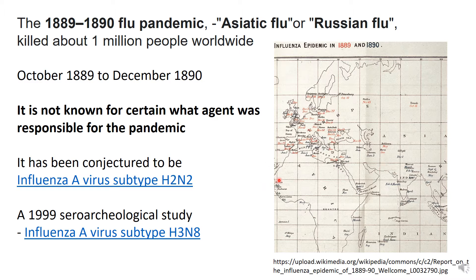It was conjectured to be a subtype H2N2, and in 1999 a serological study looked at 50 to 100-year-olds who would have been alive then and found that influenza A virus subtype H3N8 was circulating. But as far as I know, it still hasn't been completely proven that this pandemic was caused by influenza A.